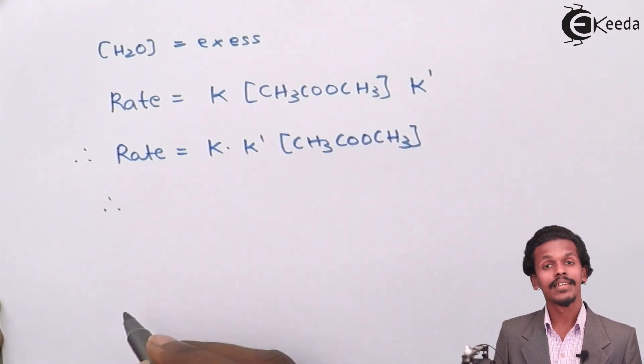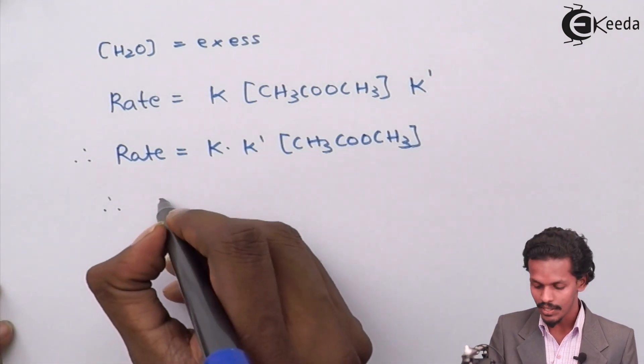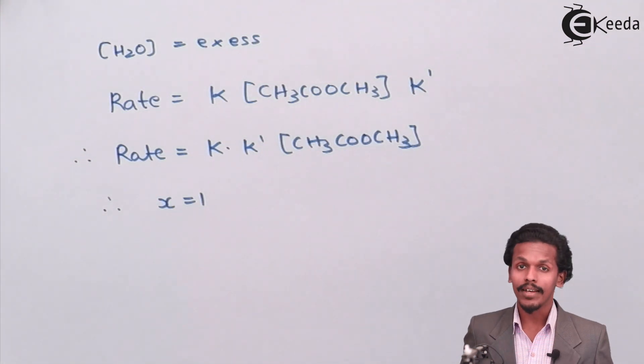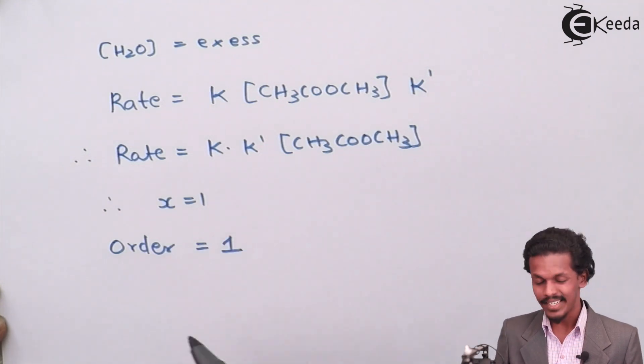And now in this case, the experimental exponent is x, which is 1. So therefore, the overall order of reaction will be 1 itself.